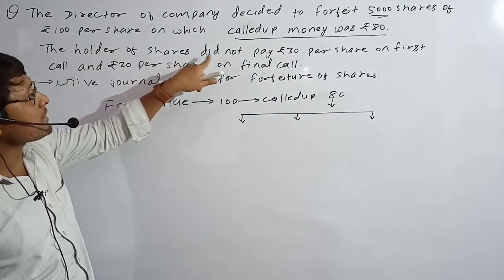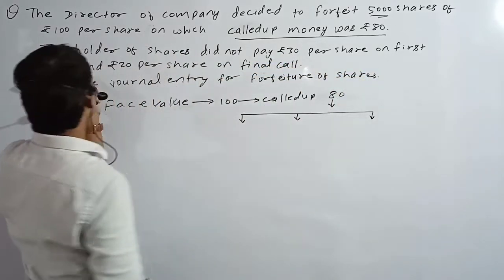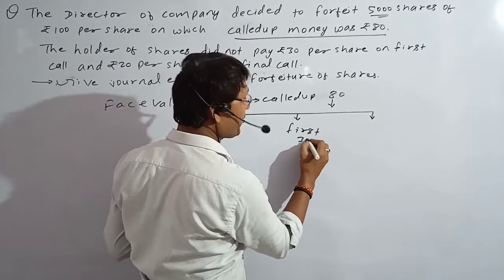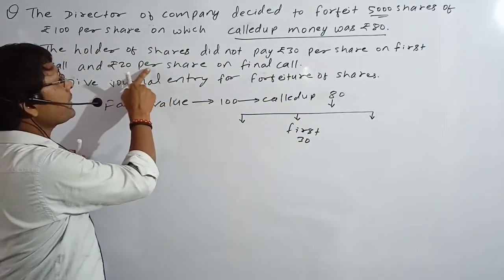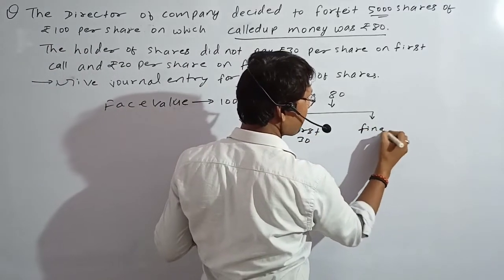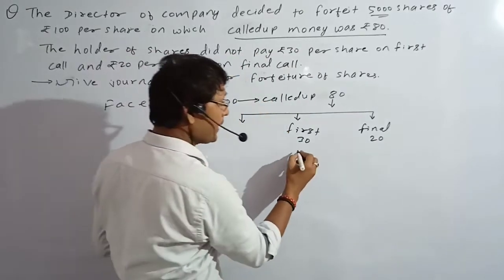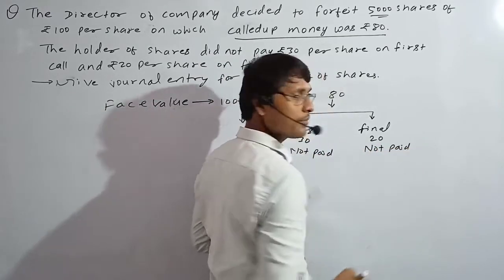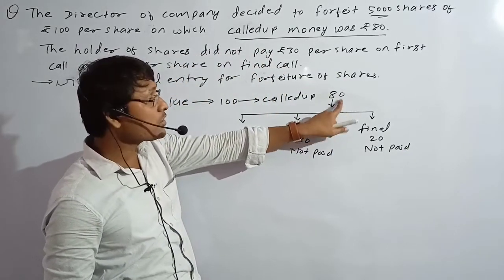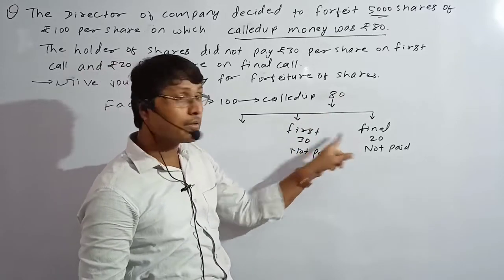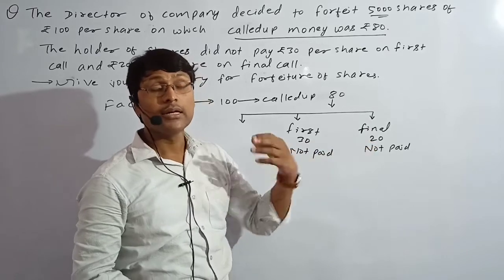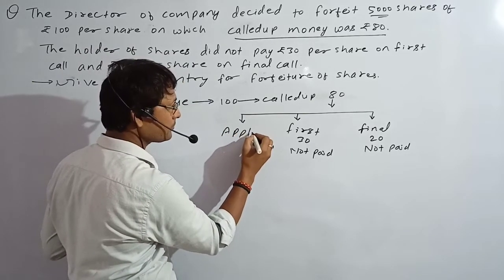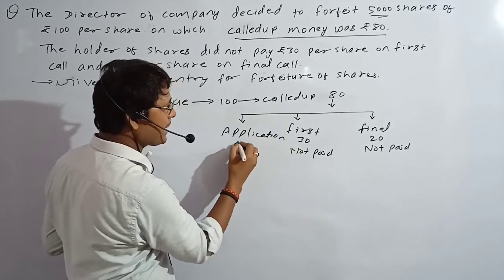The holder of shares did not pay ₹30 per share on the first call. He didn't pay on the first call. And he didn't pay ₹20 on the final call — not paid. Now, ₹80 of the company was called up. The company asked for application and allotment, first call, and final call.